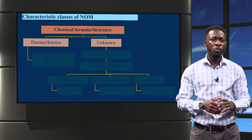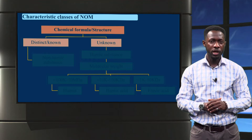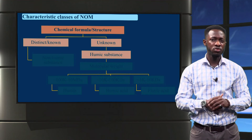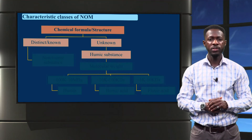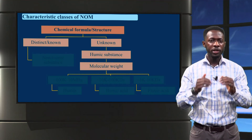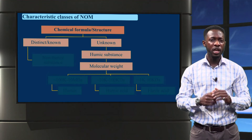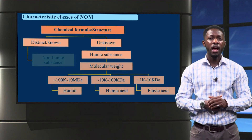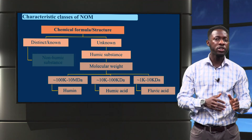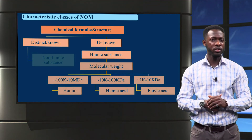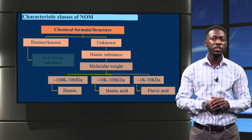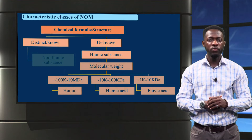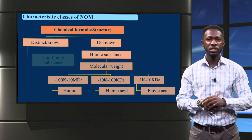Now let's look at the second class, based on chemical formula or structure. There is a fraction of NOM whose chemical structure is known, referred to as non-humic substance. The other fraction with unknown chemical structure is referred to as humic substance. However, we can further break this fraction down based on the molecular weight of its components. Humins, seen as the heaviest components, can have sizes ranging from hundreds of thousands to millions. Fulvic acids range from tens of thousands to hundreds of thousands, and the smallest — fulvic acids — between a thousand and tens of thousands.